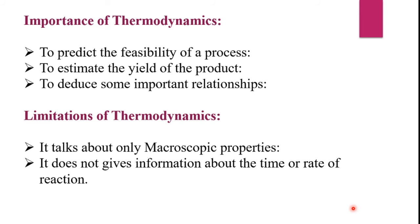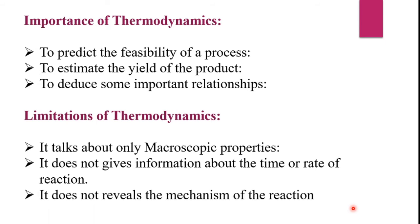Thermodynamics predicts the feasibility of a process, but it does not give any information about how much time will be required for a particular reaction to get complete. Also, it does not give information about the rate of reaction. The next limitation is it does not reveal the mechanism of a reaction — it does not give any information about the way or the path followed by a particular chemical reaction.